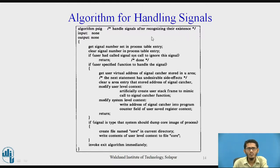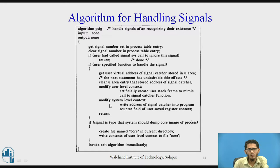The algorithm for handling signals is PSIG. It gets the signal number set in the process table entry and clears it. If the user called the signal system call to ignore the signal, it returns. Otherwise, if the user specified a function to handle the signal, it gets the user virtual address of the signal catcher stored in the user area, clears that U area entry, modifies the user-level and system-level context, and returns. If the signal requires a core dump, it creates a file named 'core' in the current directory, writes the user-level context to it, and invokes the exit algorithm immediately.